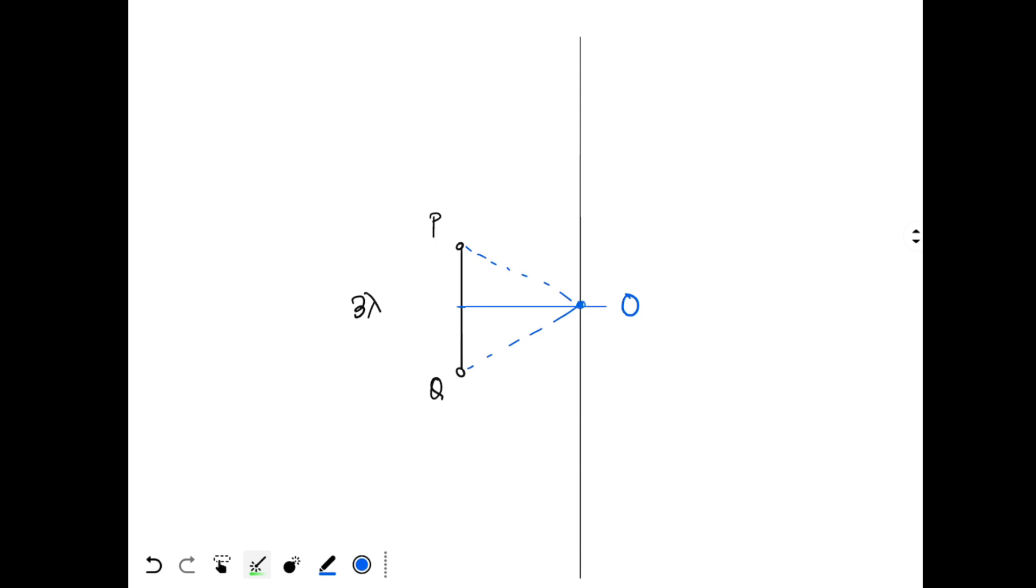And one more thing: if I take a point over here, I find the path difference at this point, then it will not be zero. Now if I keep moving along this line, when I reach infinity, what happens? If I draw a line from P which is meeting this line at infinity, then the line will be drawn parallel.